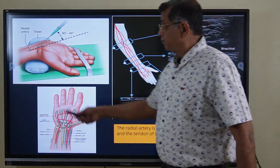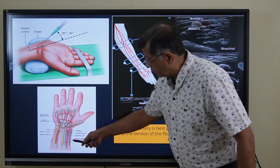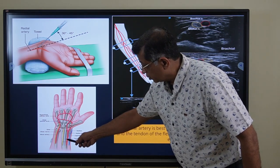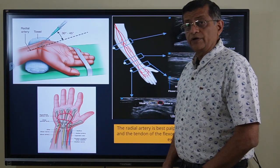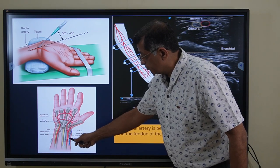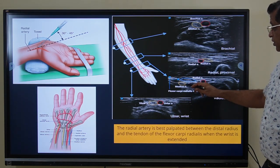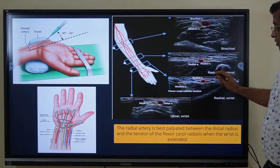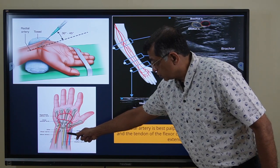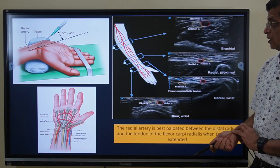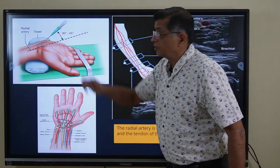To take a radial sample, the hand is extended — a folded towel can be placed underneath. The radial artery lies immediately lateral to the tendon of flexor carpi radialis; the median nerve is medial to the tendon and the radial artery is lateral. The artery overlies the lower end of the radius and is best palpated between the distal radius and the tendon of flexor carpi radialis. Ultrasound can also be used. The wrist should be mildly extended and the needle inserted at 30 to 45 degrees.